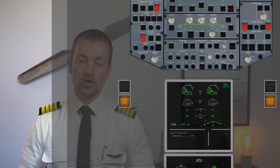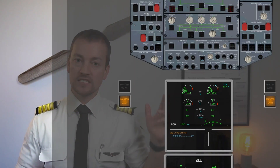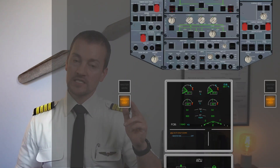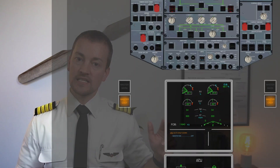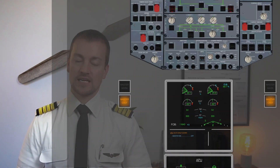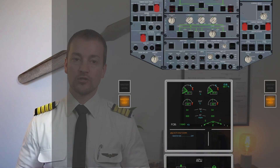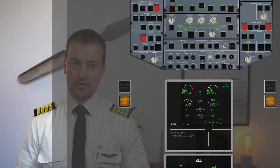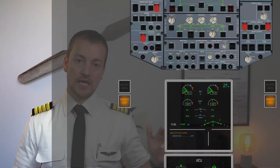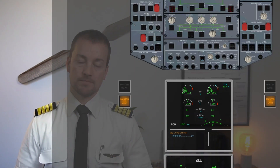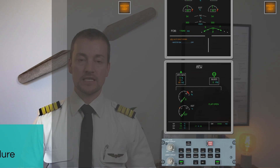The first action by the crew will be to extinguish the warning system and to identify the failure by reading the title line. This will be done by the first pilot who notices the fault. The standard callout will be: master caution, master caution, APU auto shutdown. Once this has been announced, the crew will silently do their own part initially before ECAM actions is announced.